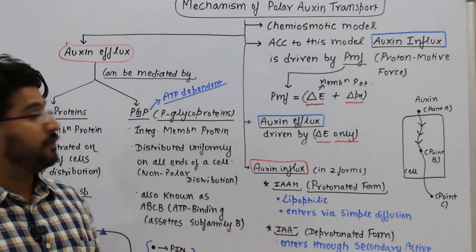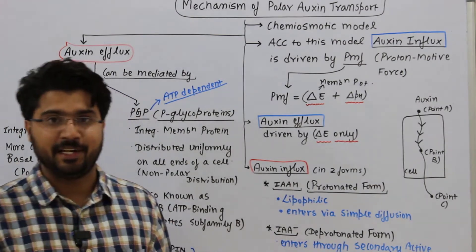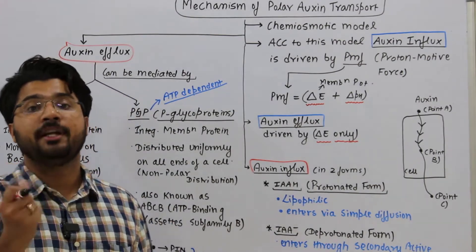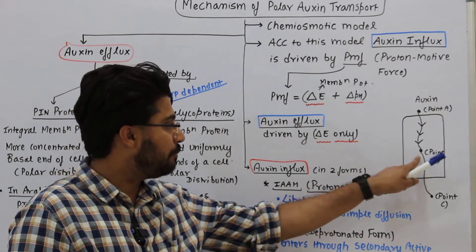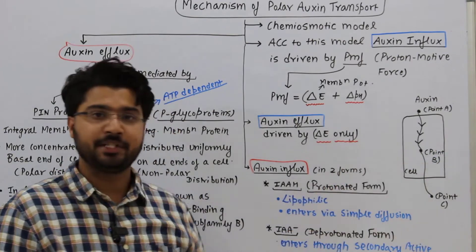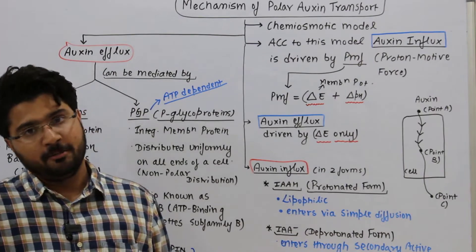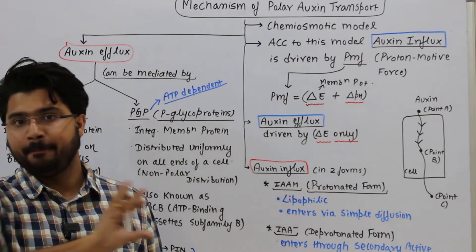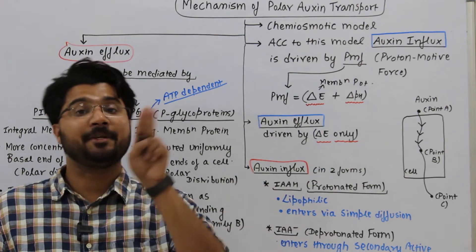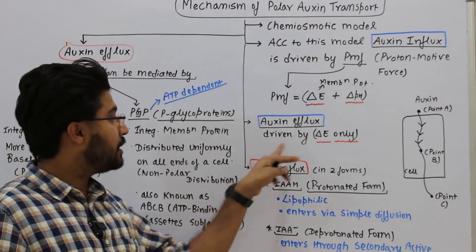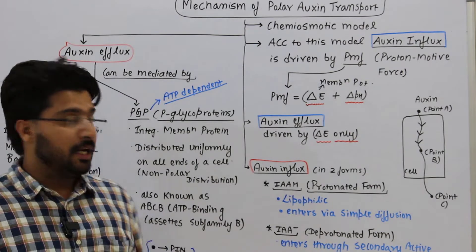Point number two of this model addresses auxin efflux — when auxin comes out of a cell, say from point B to point C. This model says auxin efflux is dependent only on the difference in membrane potential (ΔE); pH has no role. So auxin entry depends on ΔE plus ΔpH, while auxin efflux depends on ΔE only.